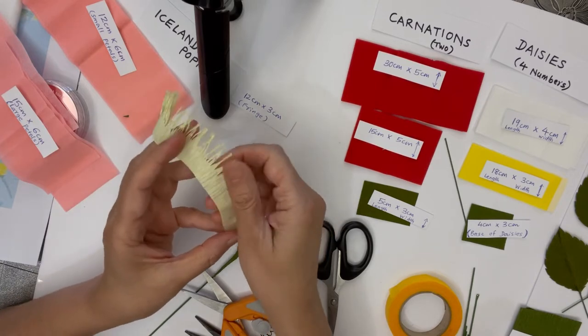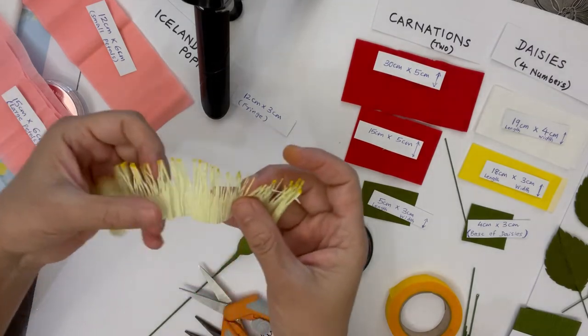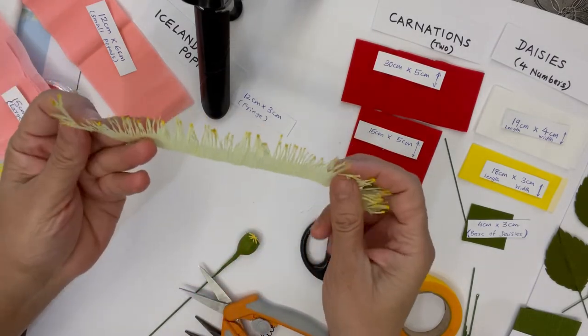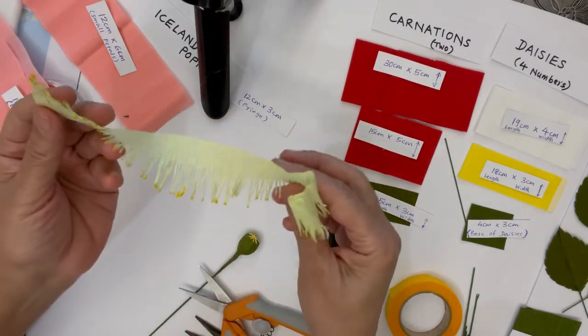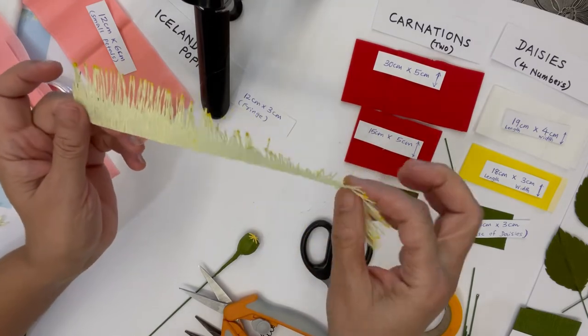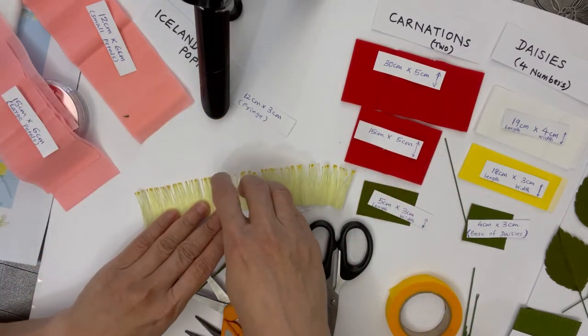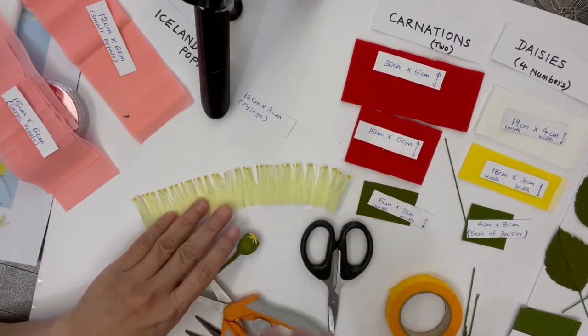To give it a more natural look, I usually paint the tips like this. I paint it yellow so that it gives a more natural look to the center. Once the fringe is made, you can paint it later or before making the flower.